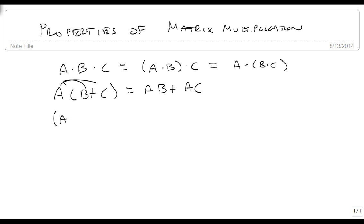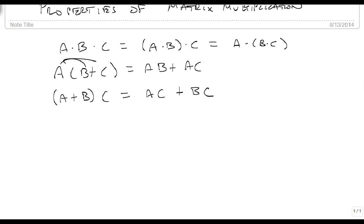But if I do this on the other side, A plus B times C, this is going to be equal to A·C plus B·C. So the part here that matters is that the order absolutely matters. Which one comes first has to be the one that comes first. So these are the first three properties.